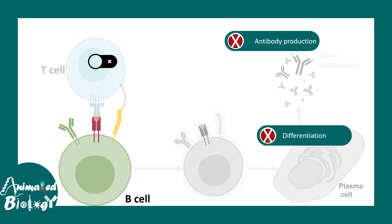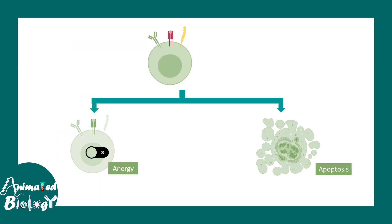In many diseases, this peripheral tolerance mechanism goes wrong, increasing the chance of autoimmune disorders. Just like T cells, B cells can also undergo anergy or apoptosis. Overall, peripheral tolerance works through anergy, apoptosis, and negative stimulation, acting as the body's second line of defense against auto-reactive immune cells.